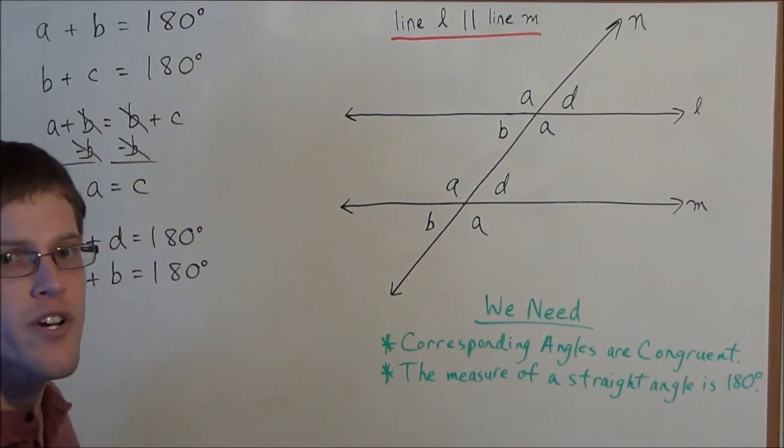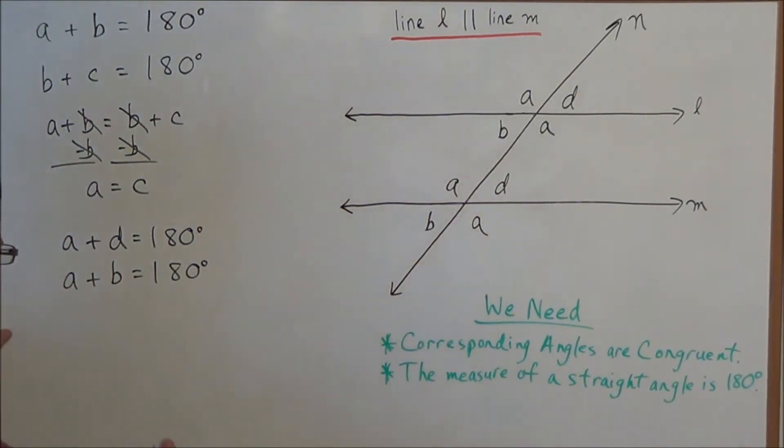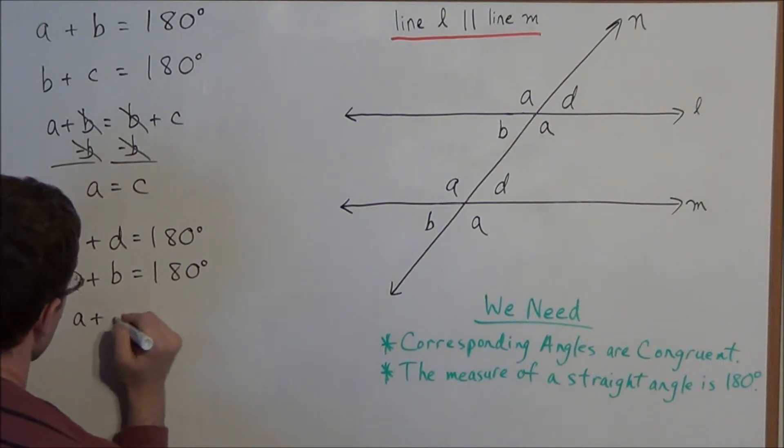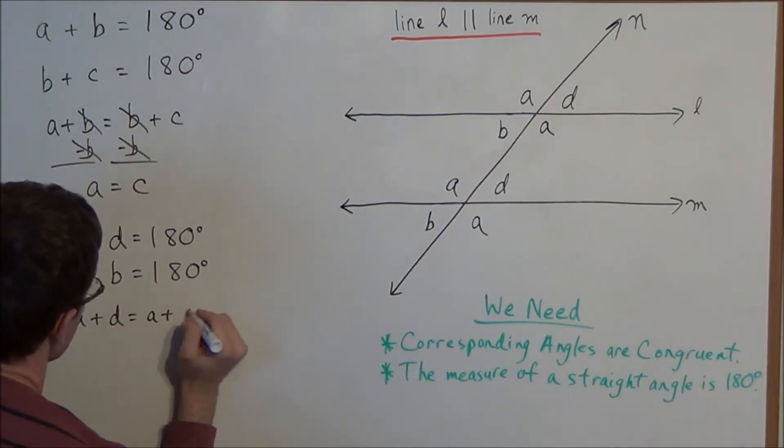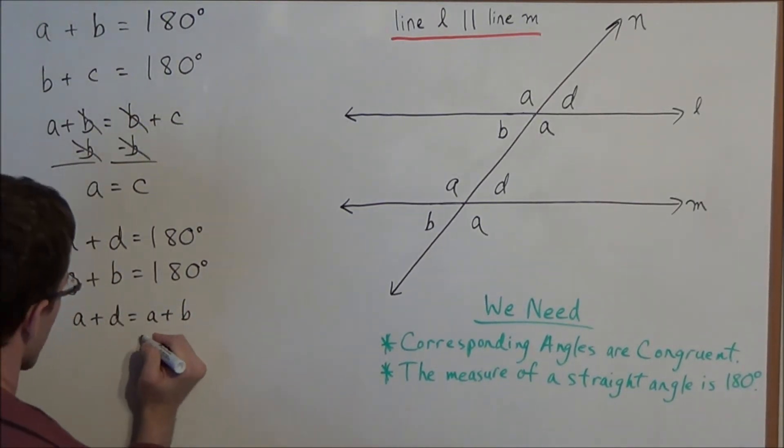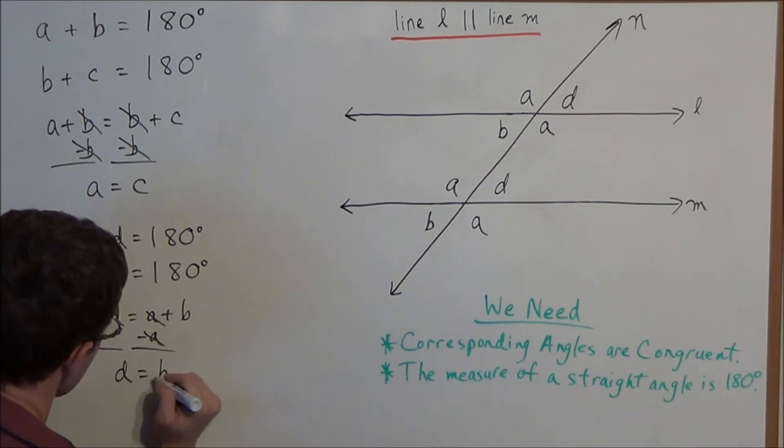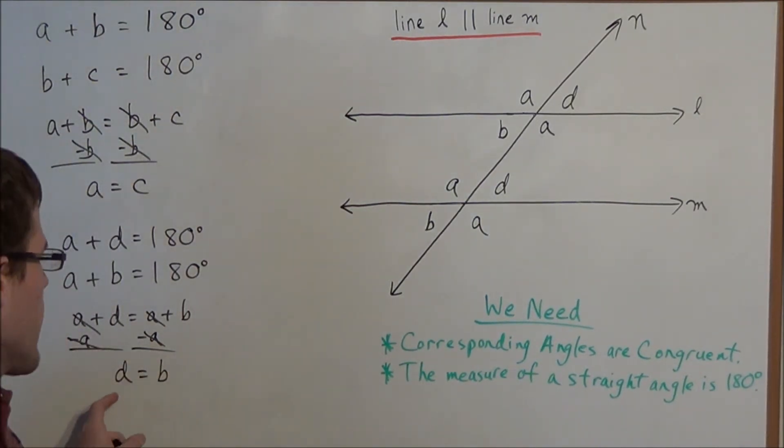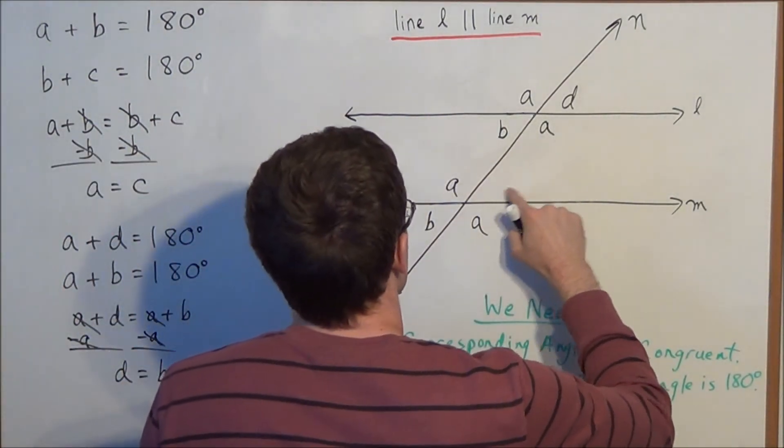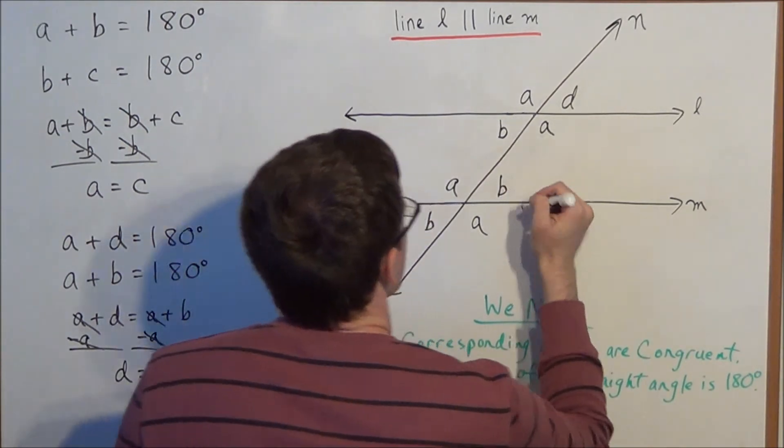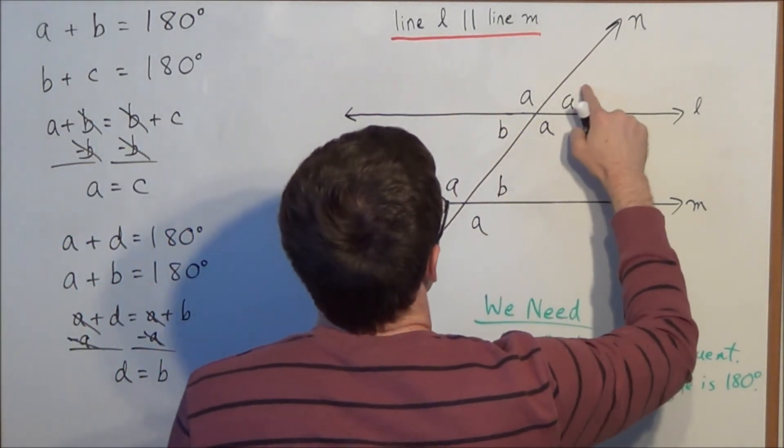So now once again using transitivity we could set these two expressions equal. So we have A plus D equals A plus B. And now we can subtract A from both sides. And this leaves us with angle D is equal to angle B. So we could rename angle D. We could rename this to be angle B. We could do it on the top section as well.